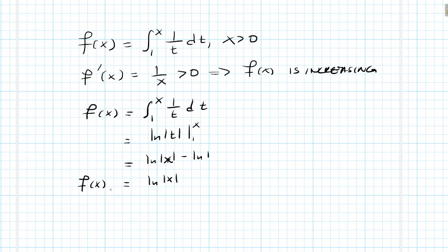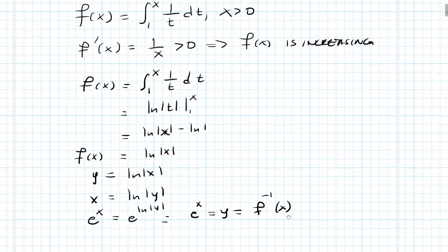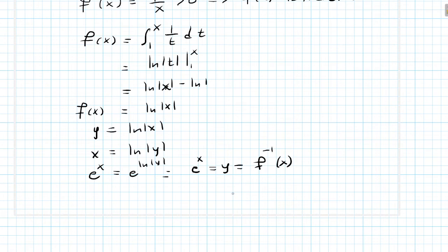Now to get f inverse of x, we replace x and y. Think of this as y equals ln of x, so we say x equals ln of y. Then e to the x equals e to the ln of y, which is just y. So e to the x equals y, and that is f inverse of x. So f inverse of 0 is e to the 0, which equals 1. We have shown that f inverse of 0 is equal to 1.